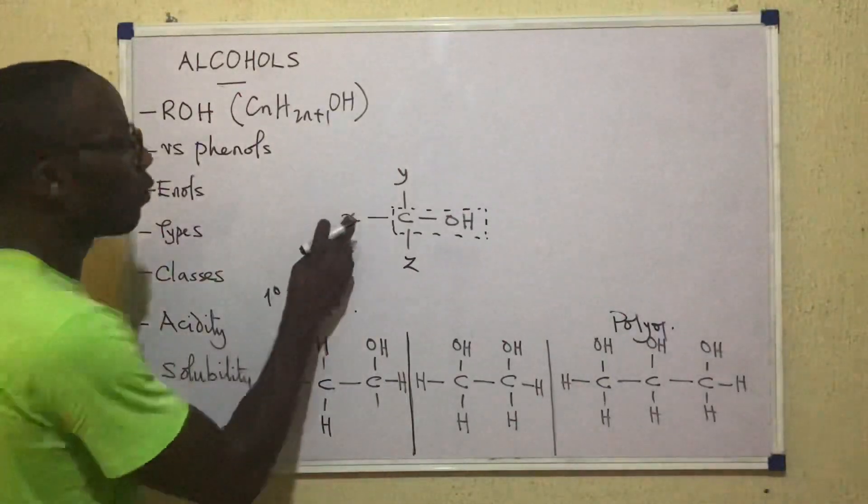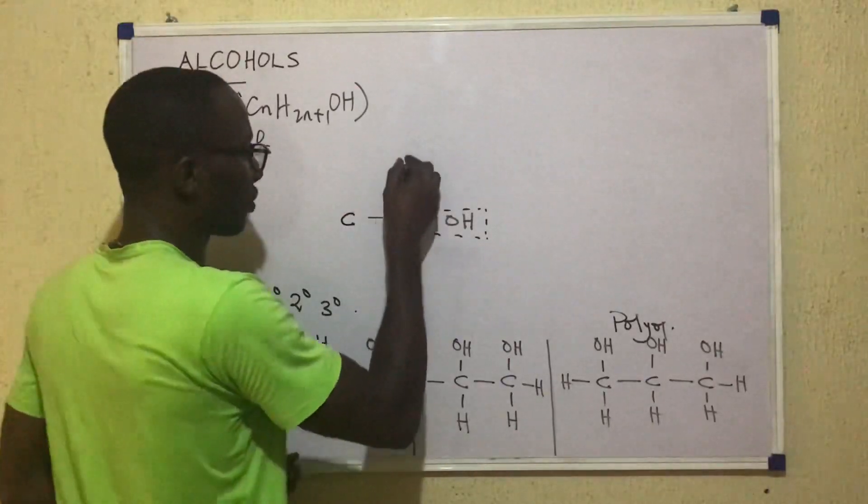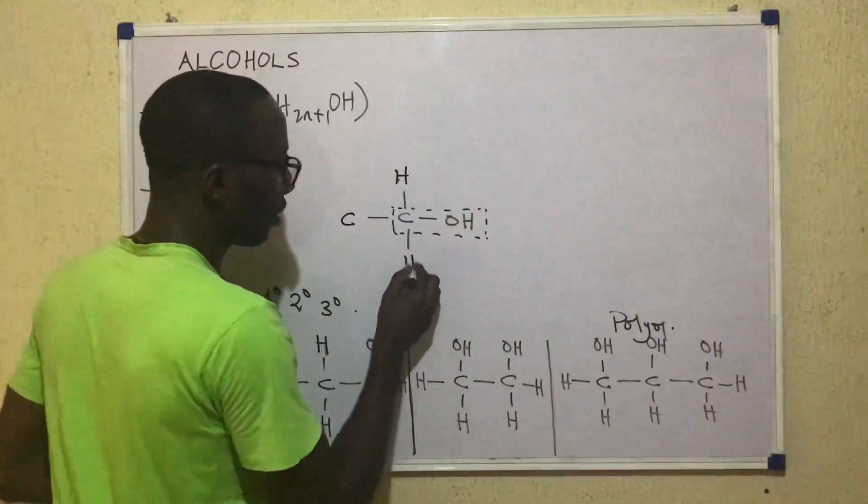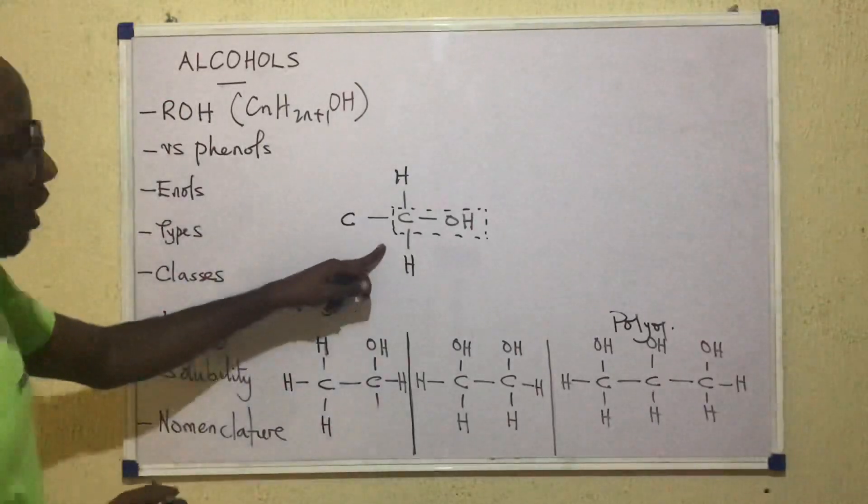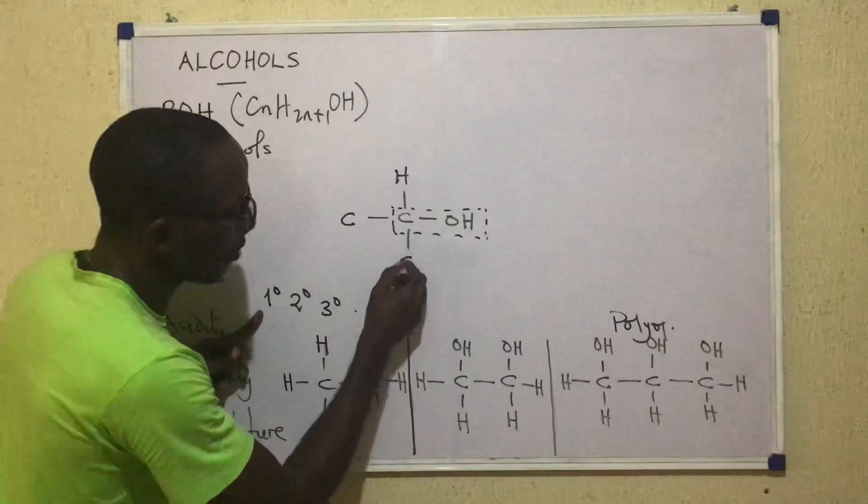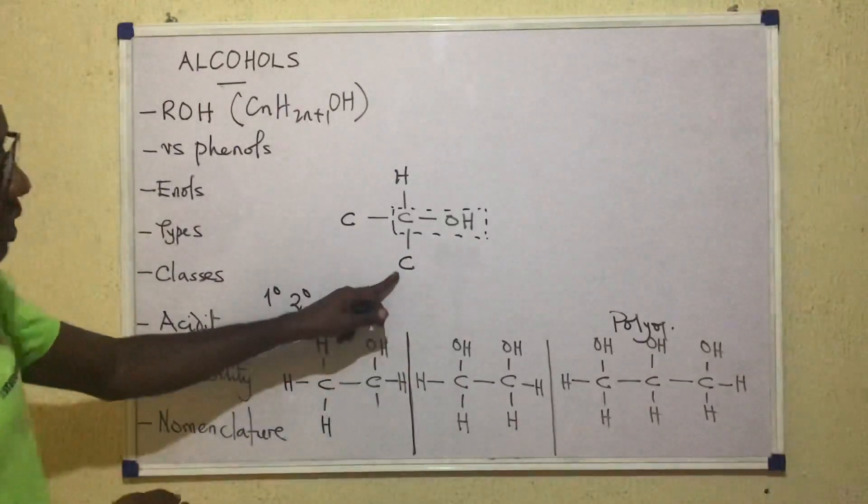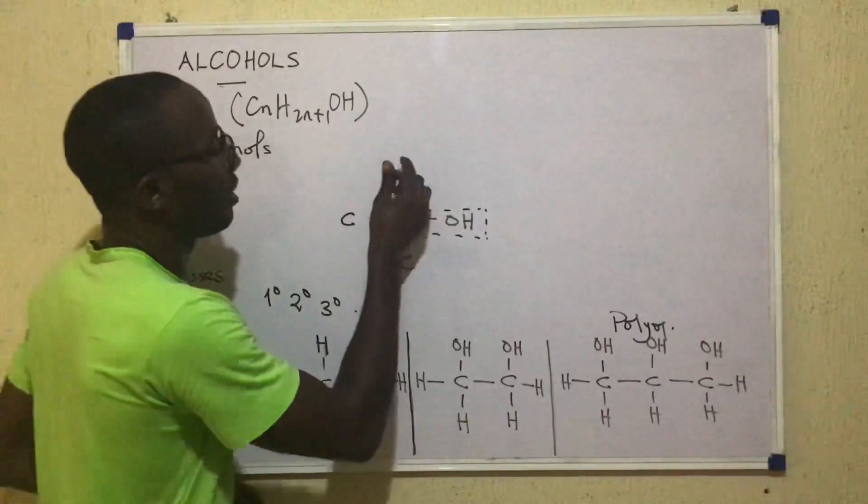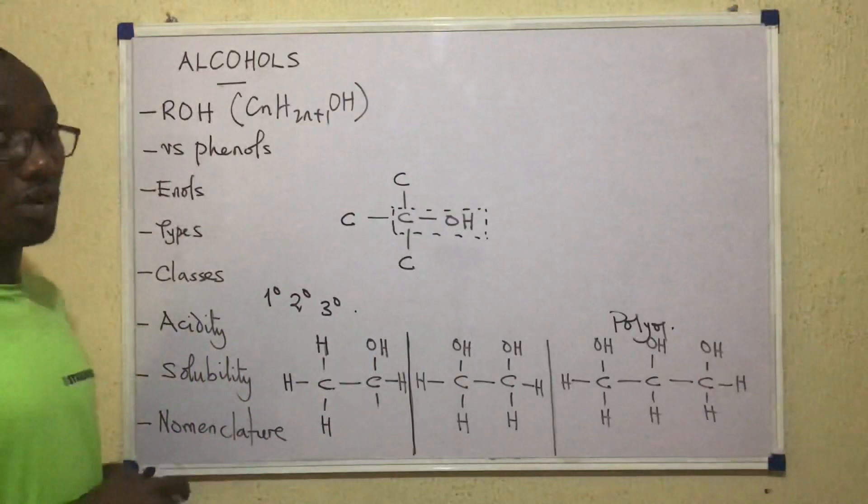If only one leads us to carbon, maybe the other two lead us to hydrogen like this, we say that this alcohol is primary. But if two lead us to carbon, we say the alcohol is secondary. And if all three of them lead us to carbon, we say the alcohol is tertiary.